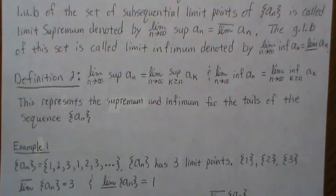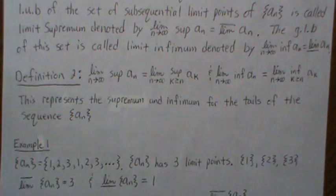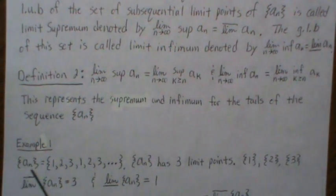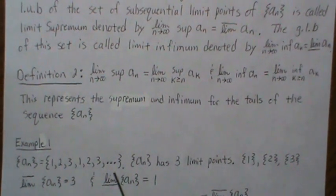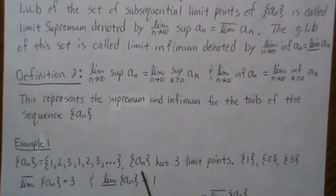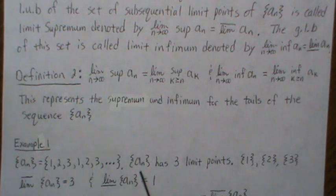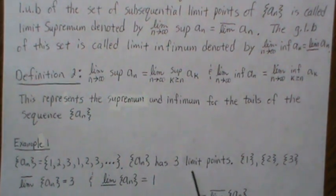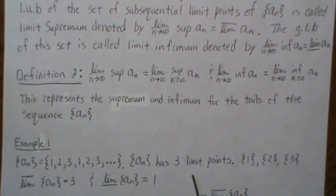Here's an example. Let's say we have the sequence 1, 2, 3, 1, 2, 3, 1, 2, 3, ... Then AN has three limit points.